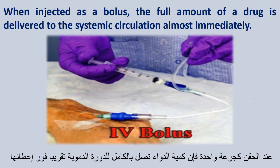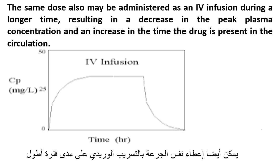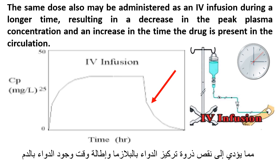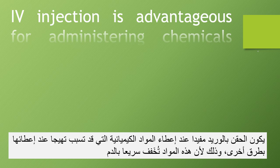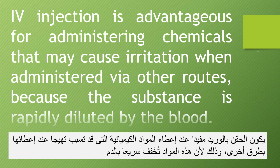When injected as a bolus, the full amount of a drug is delivered to the systemic circulation most immediately. The same dose may also be administered as an IV infusion over a longer time, resulting in a decrease in the peak plasma concentration and an increase in the time the drug is present in circulation. IV injection is also advantageous for chemicals that may cause irritation when administered via other routes, because the substance is rapidly diluted by the blood.